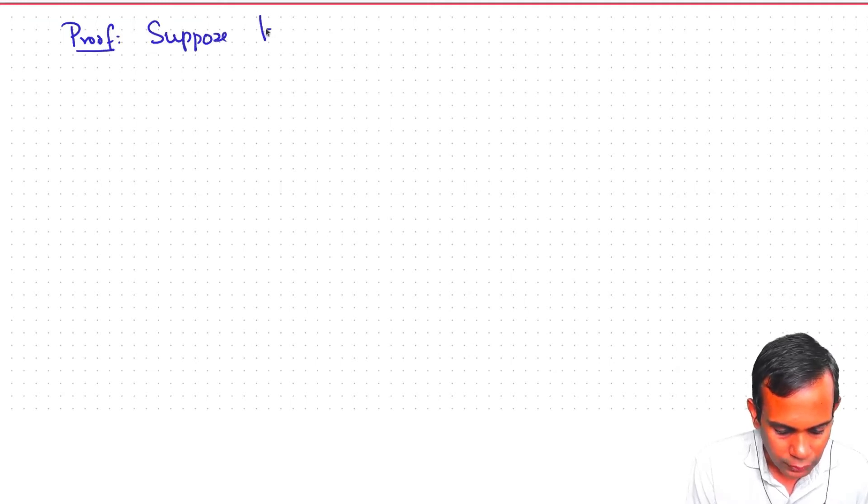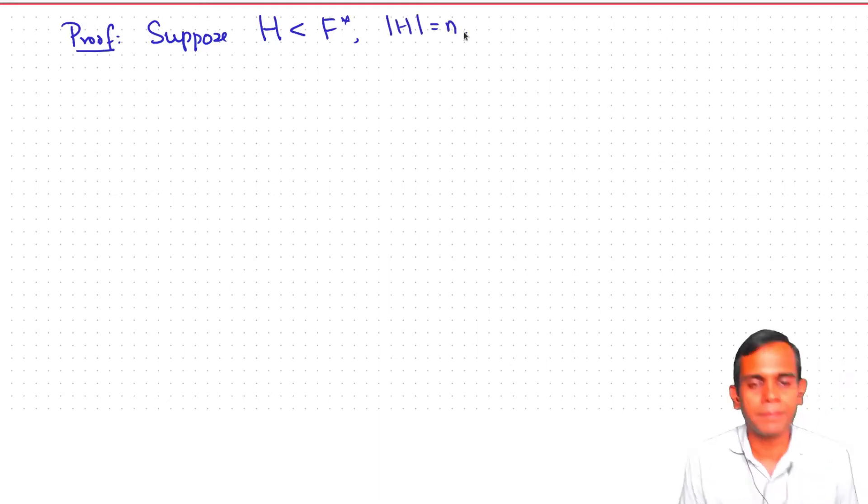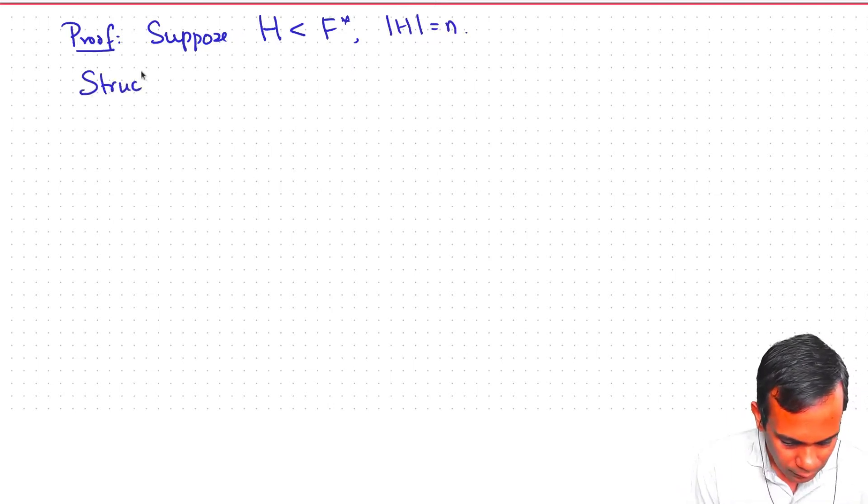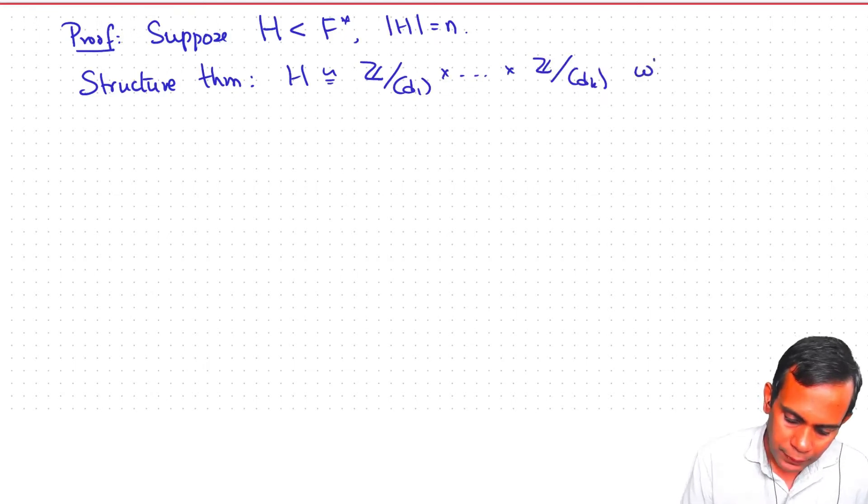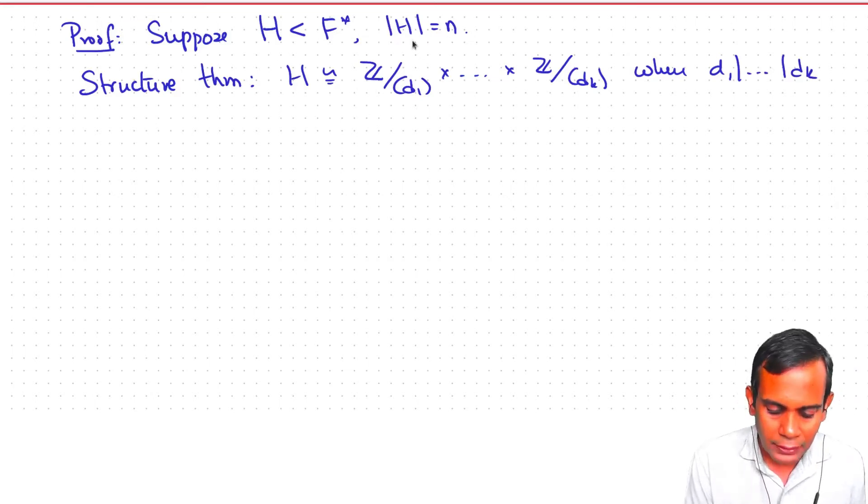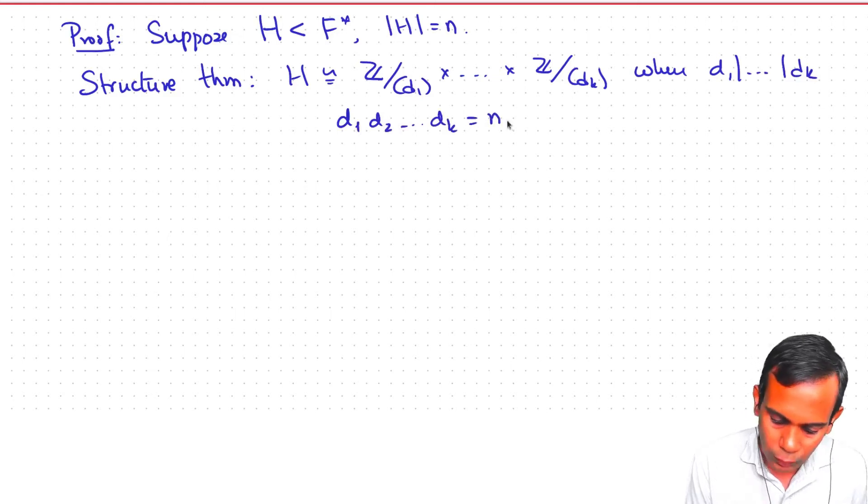Suppose H is a subgroup of F star and cardinality of H is equal to n. Then by the structure theorem for finite abelian groups, we have that H is isomorphic to Z mod d1 cross Z mod d2 cross Z mod dk, where d1 divides d2 divides dk. And the additional fact that the size of H is n means that d1 d2 dk is n, the product of these things is equal to n.